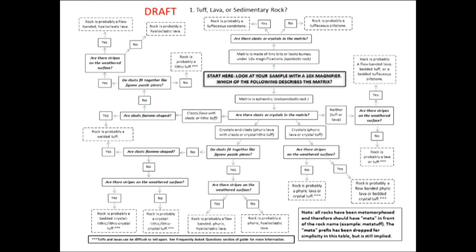Once you've decided whether the matrix is aphanitic or granular: if it's granular, you go up on the chart and end up with only two options — does it have crystals and/or glass or not? If you decide it's aphanitic, you have a lot more flowchart to go. We've tried to provide naming options at some key places in case you can't make it to the end of the flowchart.